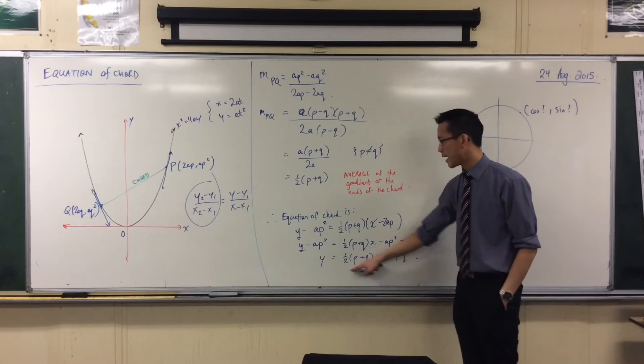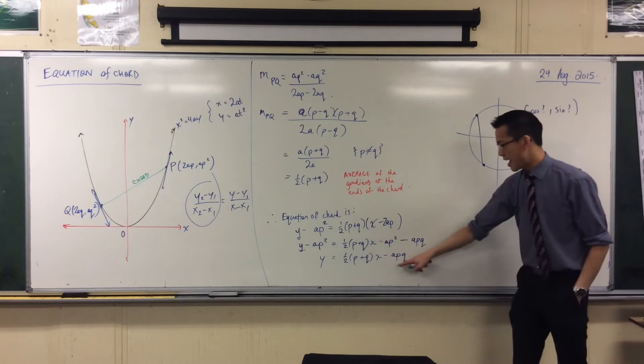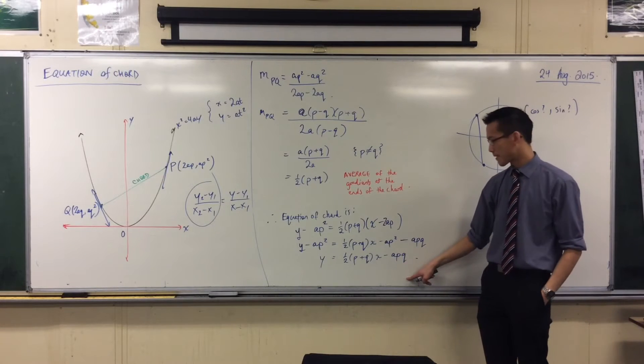So there's my m, that half p plus q I already identified as the gradient, and there would be my corresponding y-intercept, b.